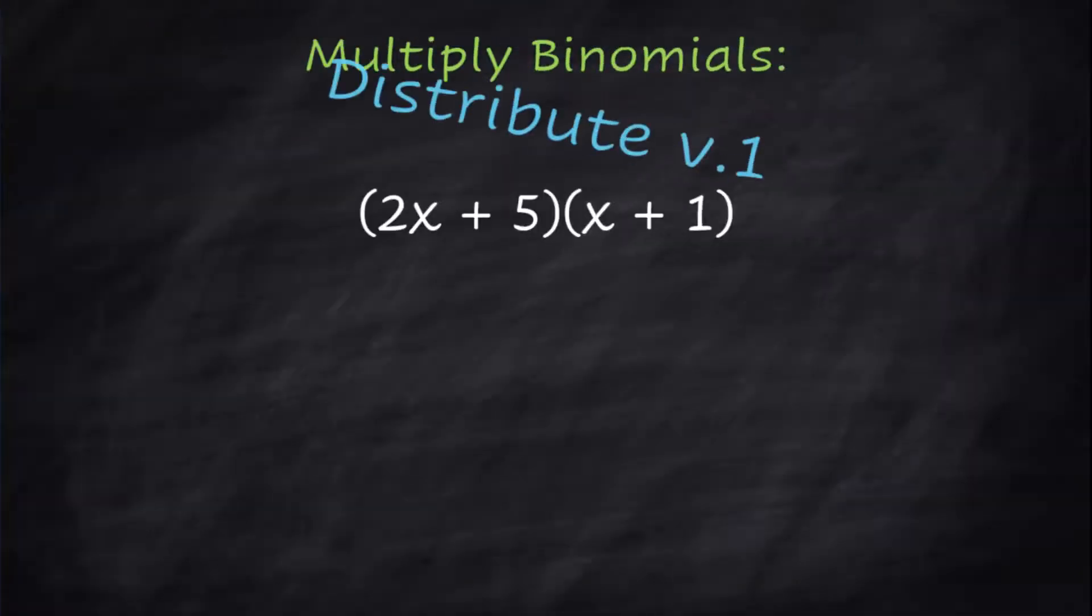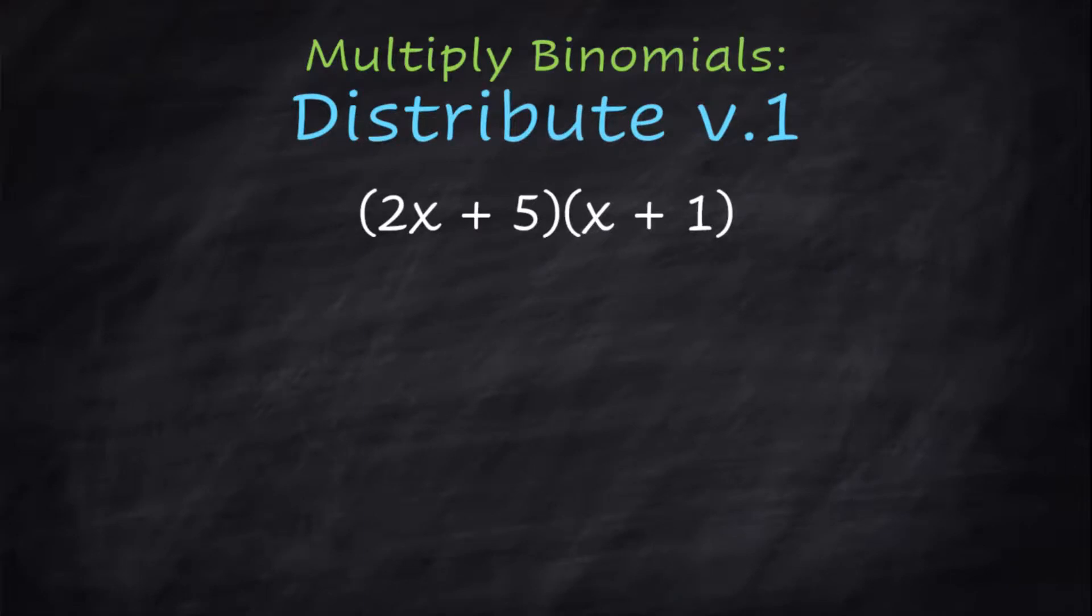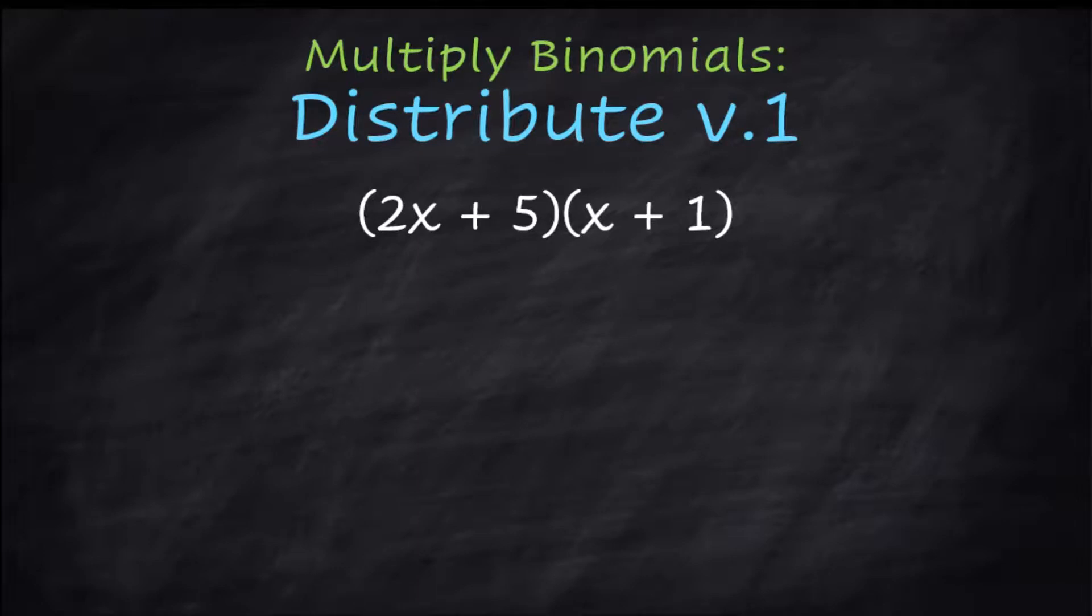The third way is to use the distributive property, but I can show you how to do this two different ways. Now distributive property version 1, take this term, the 2x, and I'm just going to distribute it to each term on the other side.